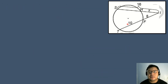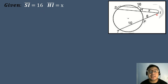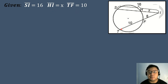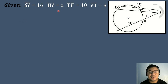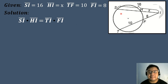Let's have an example. We have a given circle where the measure of segment SI (the secant segment) is equal to 16, segment HI (the external segment) is equal to X, segment TF is equal to 10, and segment FI is equal to 8. To solve for segment HI, the formula is: segment SI times segment HI equals segment TI times segment FI.